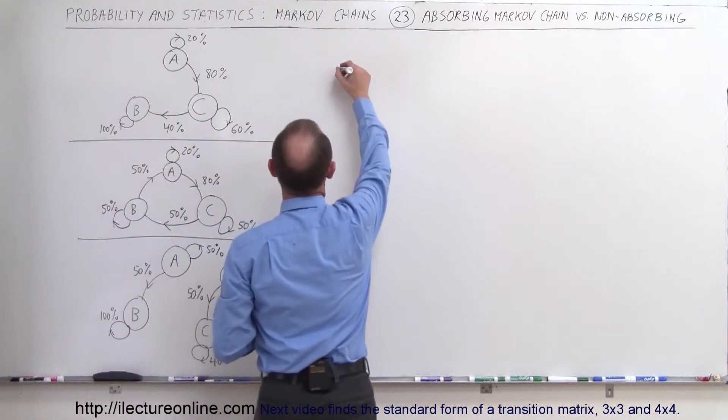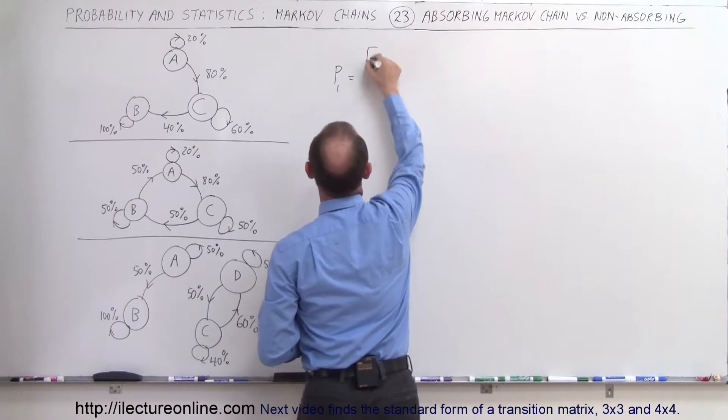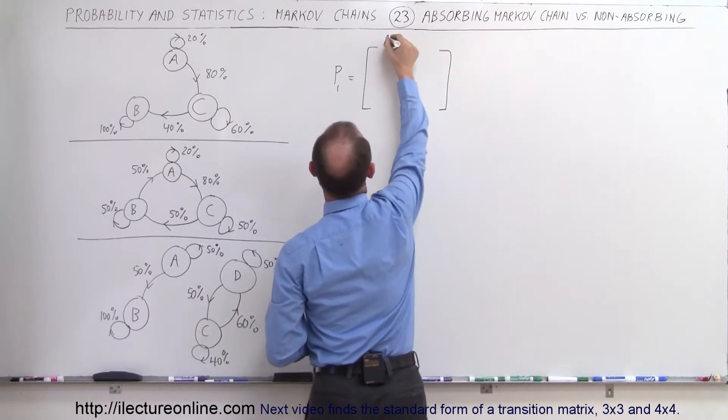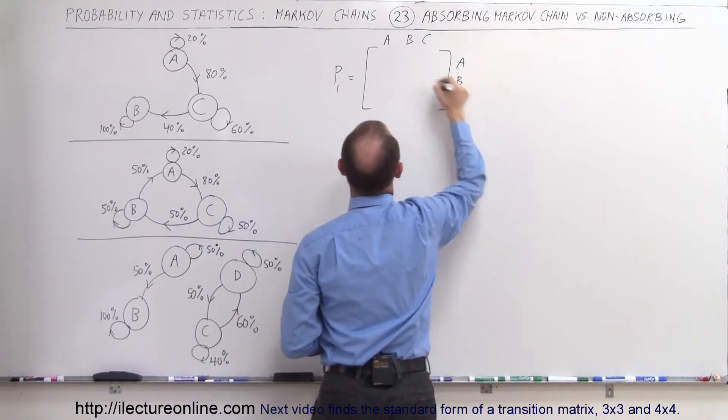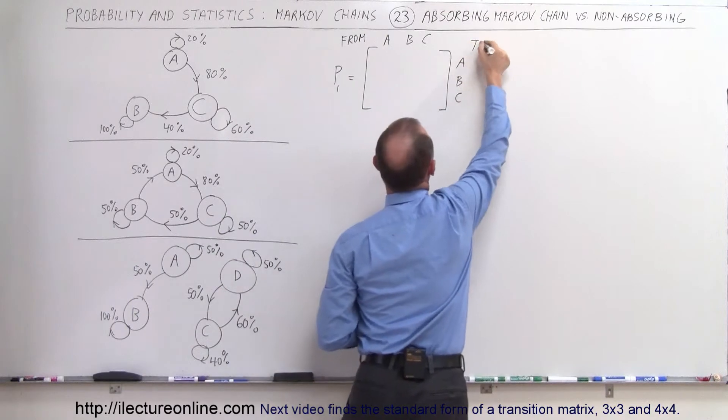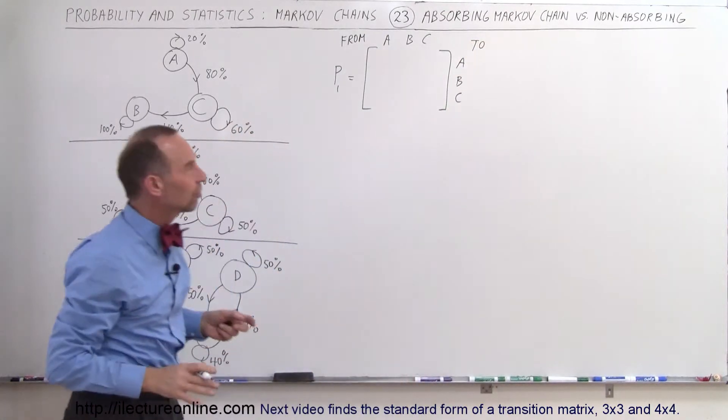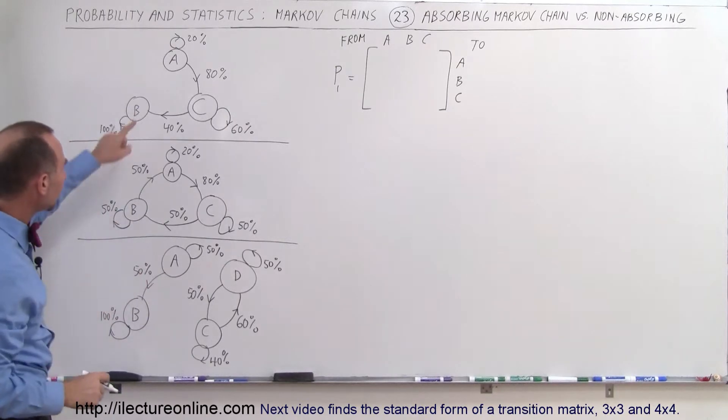So for the first one, let's call it P sub 1. This is equal to, and that would be from A, B, C to A, B, C. So again, this is from and this is to. And I really recommend that you always write those words there so you can see that it goes from here to there.